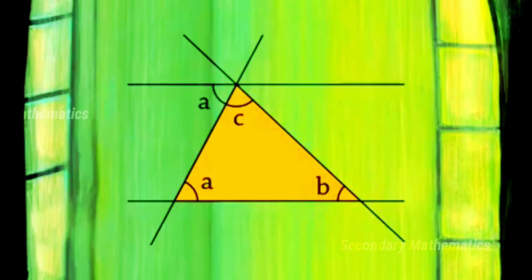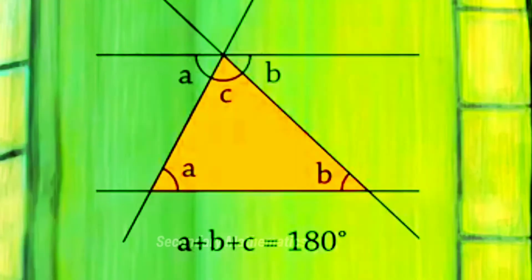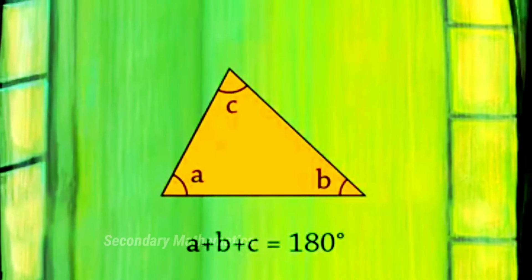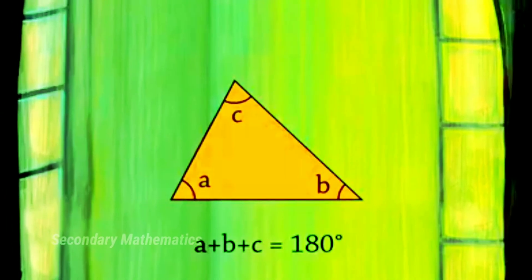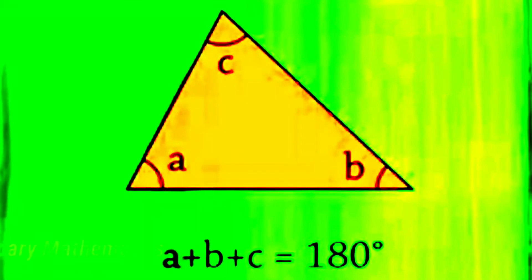And this angle is equal to B. So angle ABC is a straight angle, meaning angle A plus B plus C equals 180 degrees. This proves the sum of three angles of a triangle is 180 degrees.